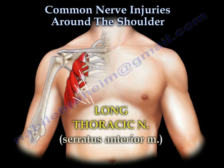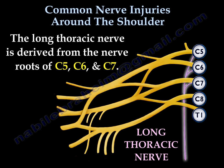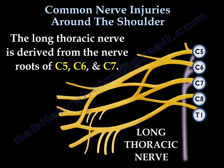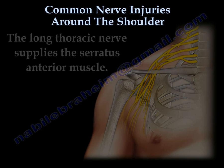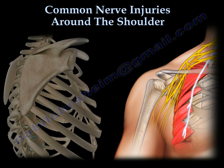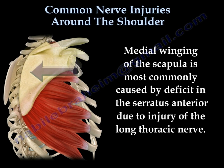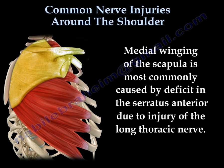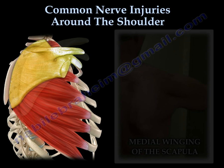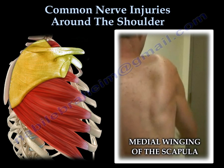Long thoracic nerve — serratus anterior muscle. The long thoracic nerve comes from the roots of C5, C6, and C7. It supplies the serratus anterior muscle. Medial winging of the scapula is most commonly caused by a deficit in the serratus anterior muscle due to injury of the long thoracic nerve. Here there is an example of medial winging of the scapula.